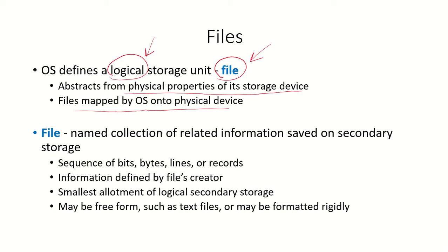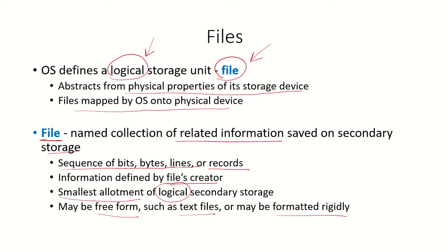A file is a named collection of related information saved on secondary storage. It can be a sequence of bits, bytes, lines, or records, and this structure is defined by the creator of that file. The file can also be considered as the smallest allotment of logical secondary storage. A file can be free-form, like a text file, or formatted rigidly, like a spreadsheet.